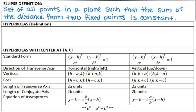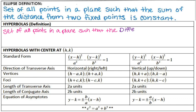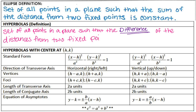Your definition for hyperbolas is very, very similar — it's basically word for word the same. It's the set of all points in a plane such that the difference of the distances from two fixed points is constant. So instead of looking at the sum of the distances from two fixed points — your foci — we're now looking at the difference.